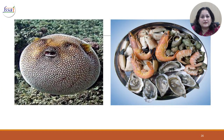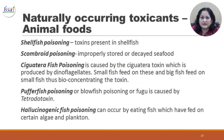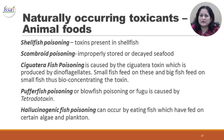There are naturally occurring toxicants in animal foods as well. Shellfish poisoning can result from toxins present in shellfish. Scombroid poisoning is because of improperly stored or decayed seafood. Ciguatera fish poisoning is caused by the ciguatoxin produced by dinoflagellates — small fish feed on these and then big fish feed on the small fish, bioconcentrating the toxin. Puffer fish or blowfish poisoning is caused by tetrodotoxin; this fish is eaten as a delicacy but can even lead to death. Hallucinogenic fish poisoning can occur by eating fish which has fed on certain algae and plankton.